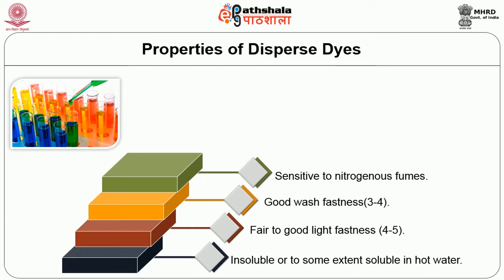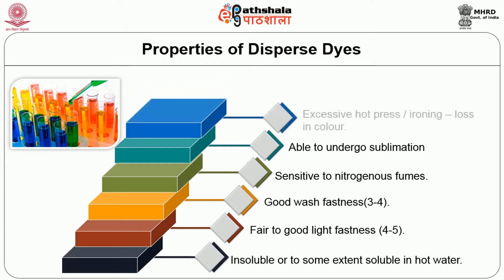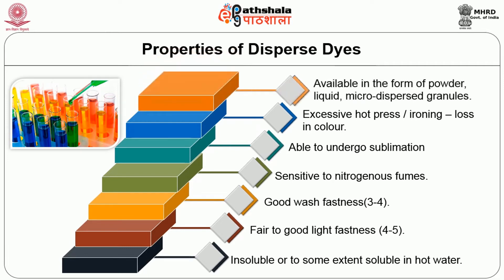The ability of dye to retain in the fabric is affected by nitrogenous fumes. A key property of disperse dye is its ability to undergo sublimation. This property is used for transfer printing, and when disperse-dyed materials are given hot press or ironing, there is a loss of colour. Disperse dyes are available in the form of powder, liquid or micro-disperse granules.